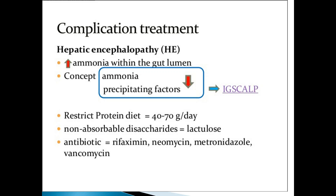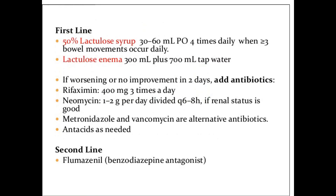Antibiotics should be given to reduce bacterial proliferation in the intestine. Rifaximin is a very good drug. Neomycin was given at one time but has ototoxicity and is now discarded. Metronidazole can be used. Ciprofloxacin can be used. Vancomycin should be used to reduce bacterial proliferation. The first line is lactulose — 50% lactulose syrup, 30 to 60 ml, so that bowel movements occur daily. If acetaminophen poisoning is suspected, use metronidazole, vancomycin, plus ciprofloxacin.